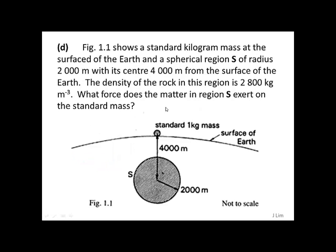Figure 1.1 shows a standard kilogram mass at the surface of the Earth and a spherical region S of radius 2,000 meters with its center 4,000 meters from the surface of the Earth. The density of the rock in this region is 2,800 kilograms per meter cubed. What force does the matter in region S exert on the standard mass?